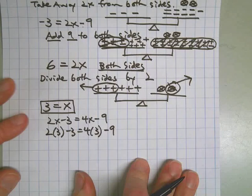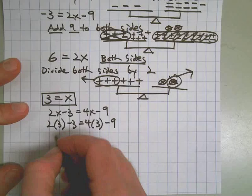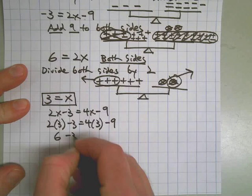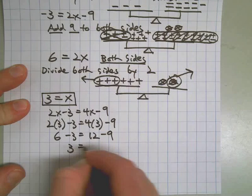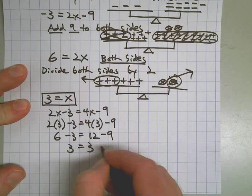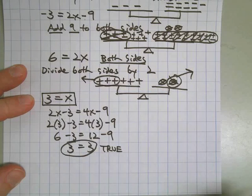Now if my answer is right, and I do the math here, I'll end up with a statement that is true. 2 times 3 is 6. 4 times 3 is 12. 6 minus 3 is 3. 12 minus 9 is 3. That is a true statement. 3 equals 3 last time I checked.